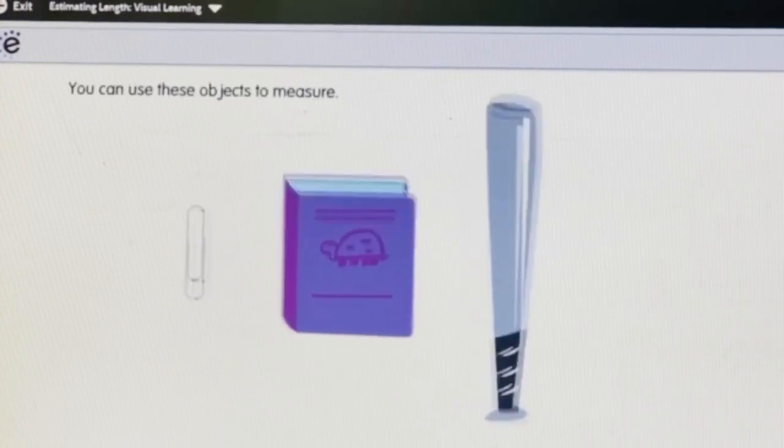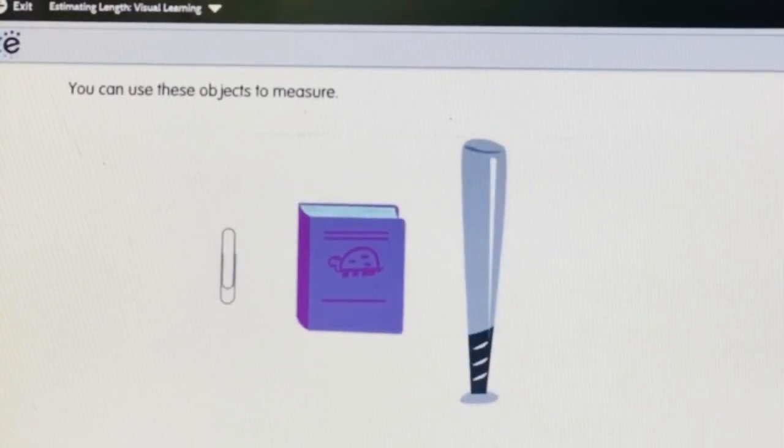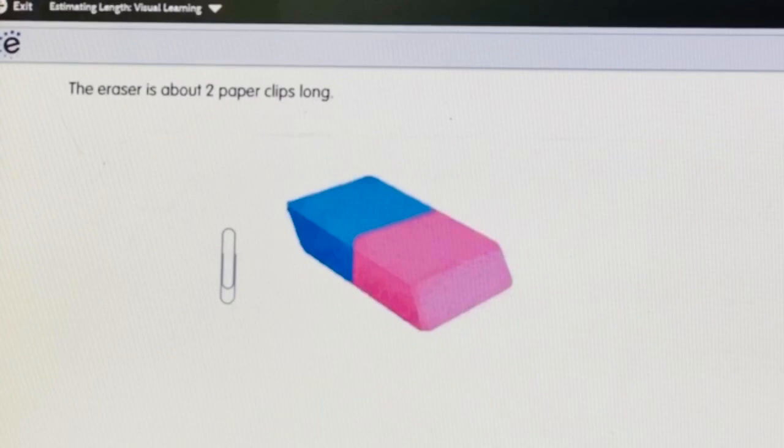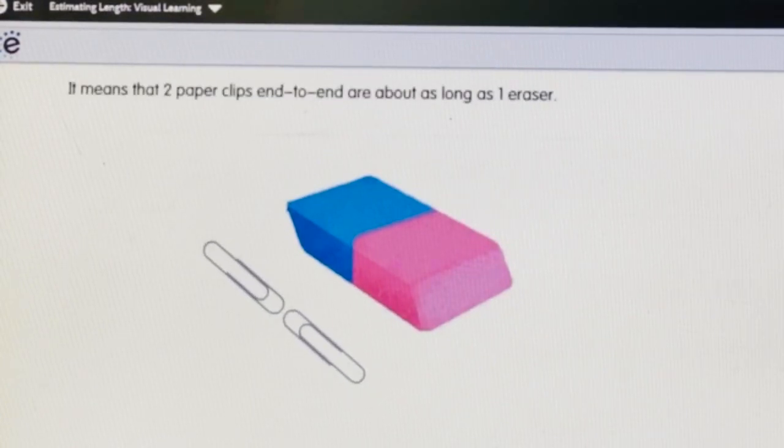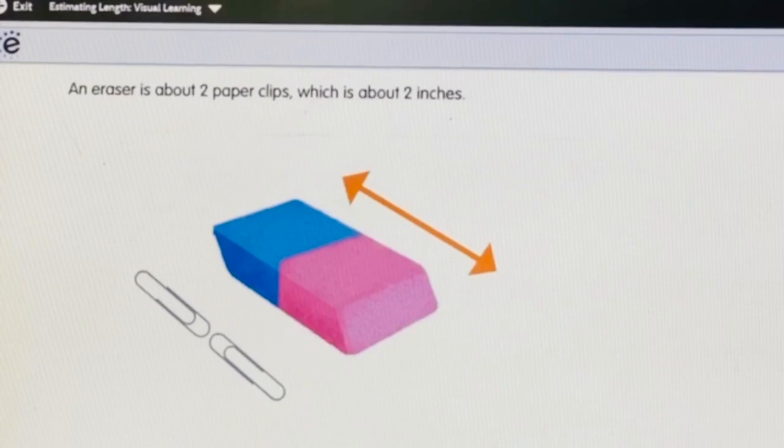You can use these objects to measure. The eraser is about 2 paper clips long. What does it mean that 1 eraser equals 2 paper clips? It means that 2 paper clips end to end are about as long as 1 eraser. An eraser is about 2 paper clips, which is about 2 inches.